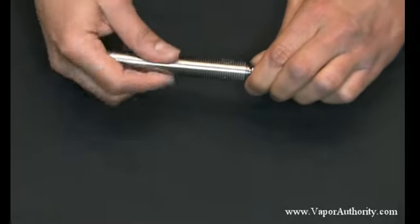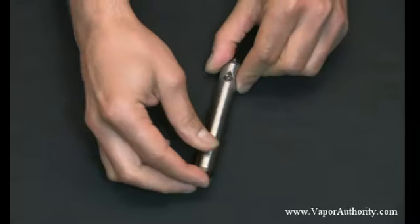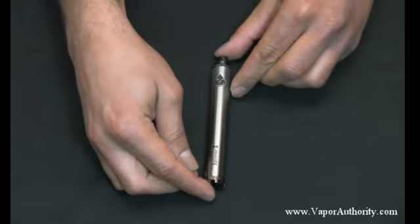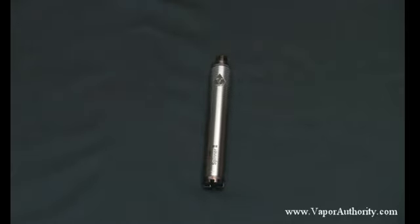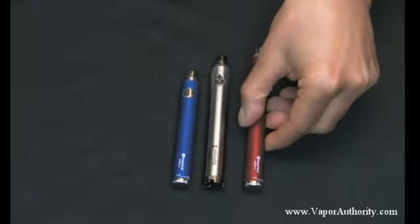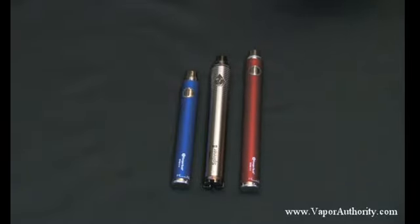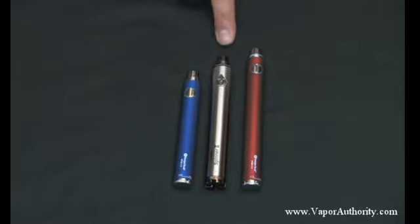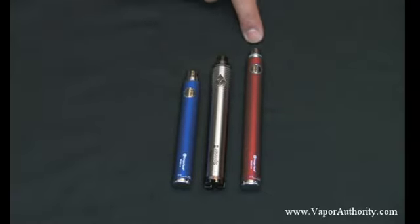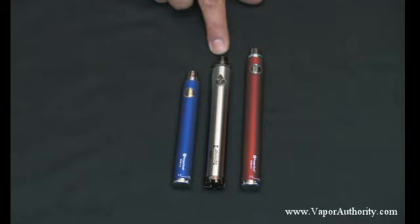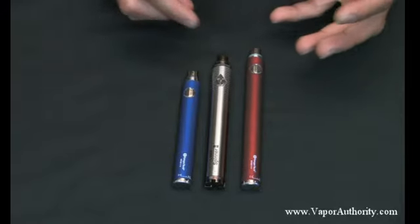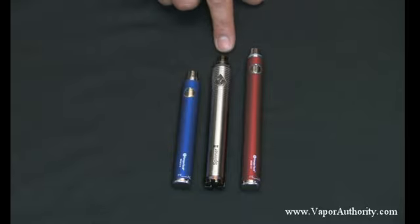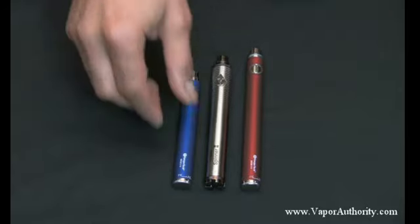Let me show you a little bit about the size of this Vision Spinner 2. Here's a Vision Spinner 2 in the 1650mAh. Let's compare it to a Kanger EVOD variable voltage twist battery. This is a 650mAh. And here's an EVOD variable voltage twist battery in the 1000mAh. You can see the difference in size pretty clearly. The Vision Spinner 2 is somewhere between the standard 1000mAh and the 650mAh. It's very impressive to me that Vision was able to get so much battery life into such a device of such a small size.